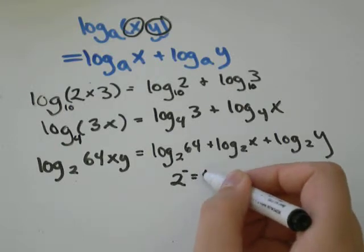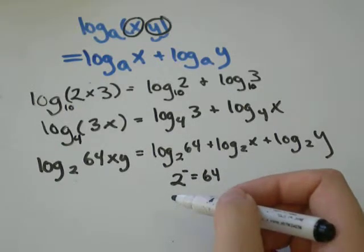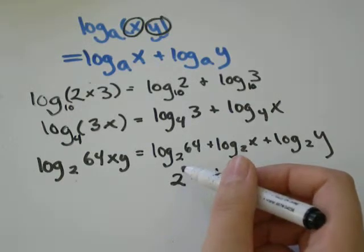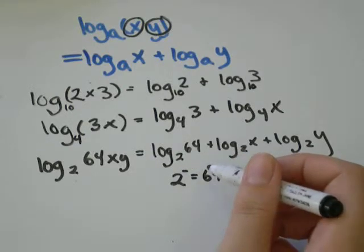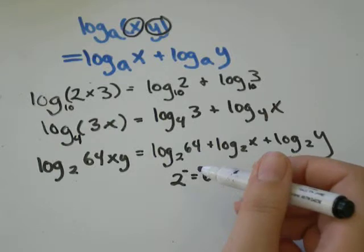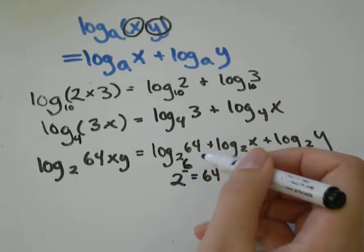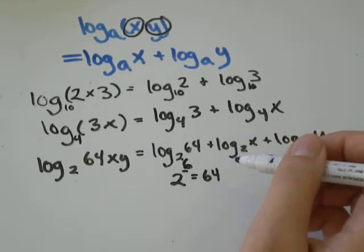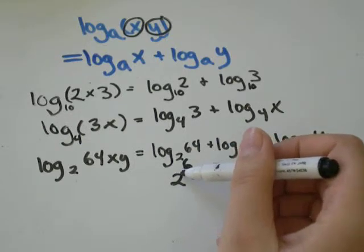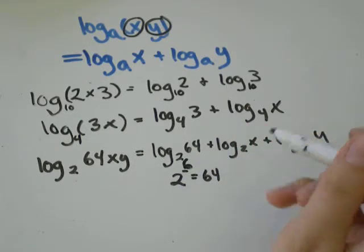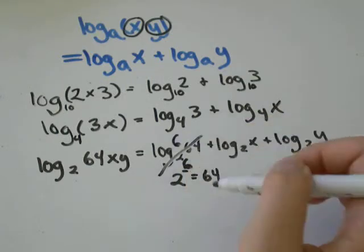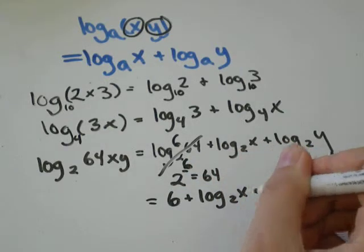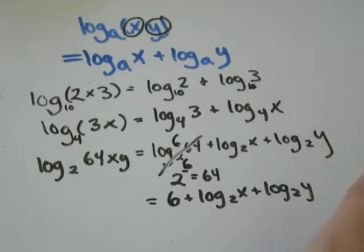Log base two of 64. 2 to the power of what exponent equals 64? 2 to the 1 is 2, 2 to the 2 is 4, 2 to the power 3 is 8, 2 to the power of 4 is 16, 2 to the power of 5 is 32. So it would be 2 to the power of 6 equals 64. You can verify that on your calculator if you go 2 and then hit the exponent button of 6. It should equal 64. So we can cross this out and put 6, and then our log would simplify down to 6 plus log 2 of x plus log 2 of y.